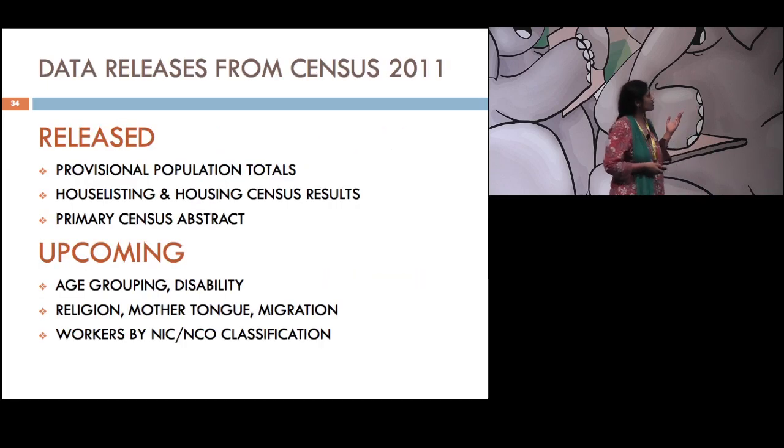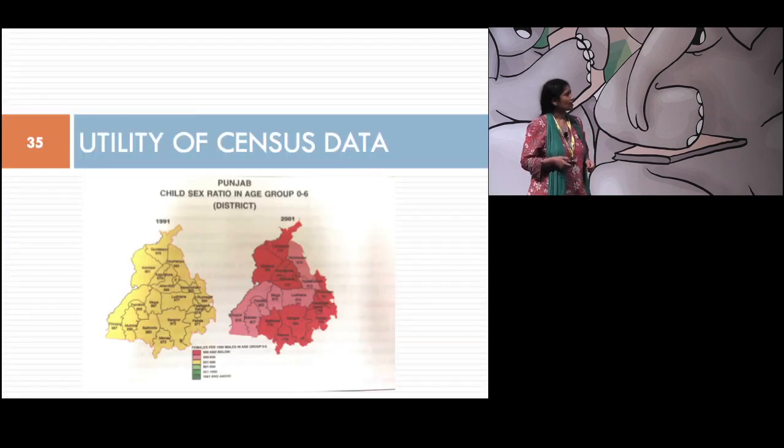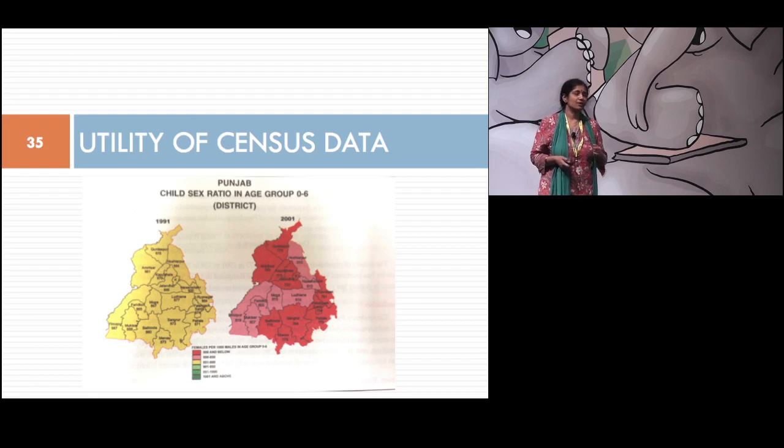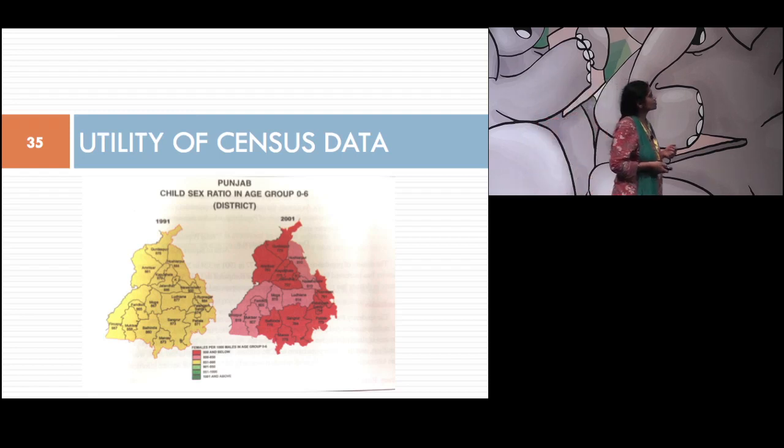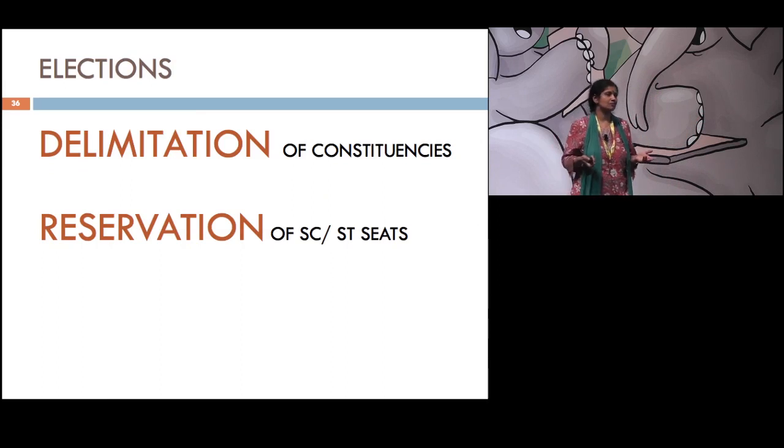These are the three data releases that have already happened: the provisional population totals, the house listing and the primary census abstracts. And soon will be coming out one by one with age data, literacy, religion, migration, mother tongue, workers and many more things too. I had a question on the form, I had a comment asking me to talk about the utility of census data. And well, everybody knows this. The elections are held on the basis of the constituencies and the constituencies are on the basis of the census data. The delimitation takes place on the basis of the census enumeration blocks and the reservation of the seats also depends on the census. So this is very important.